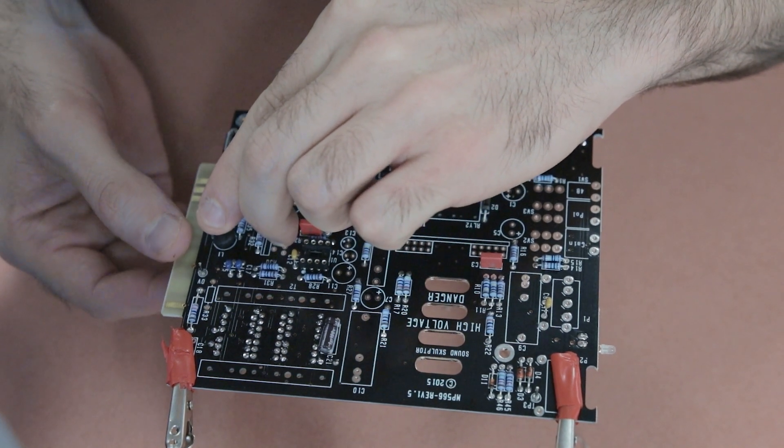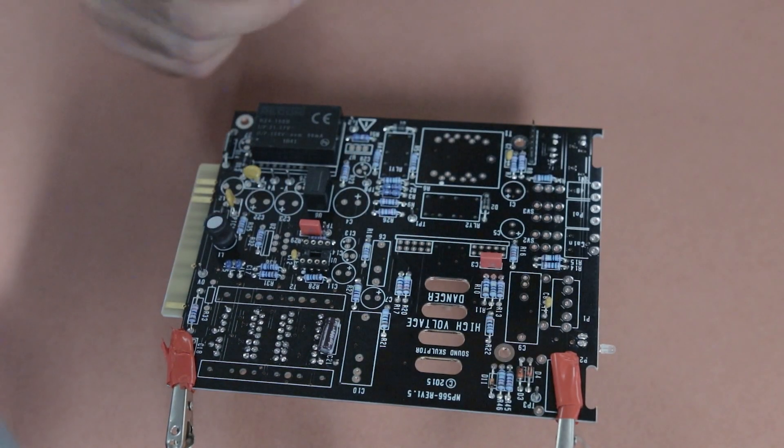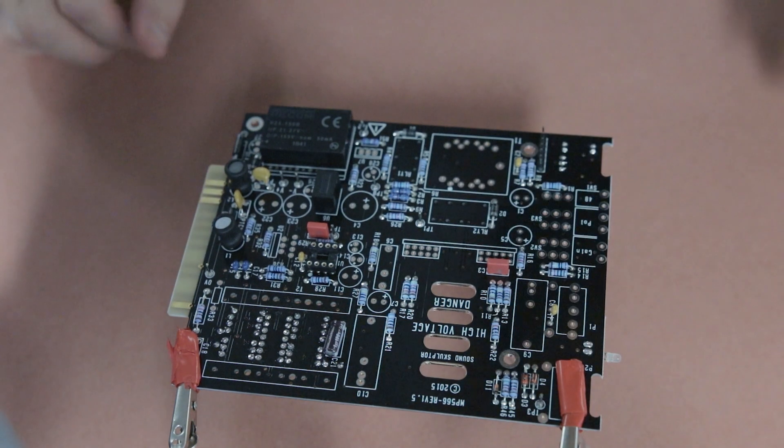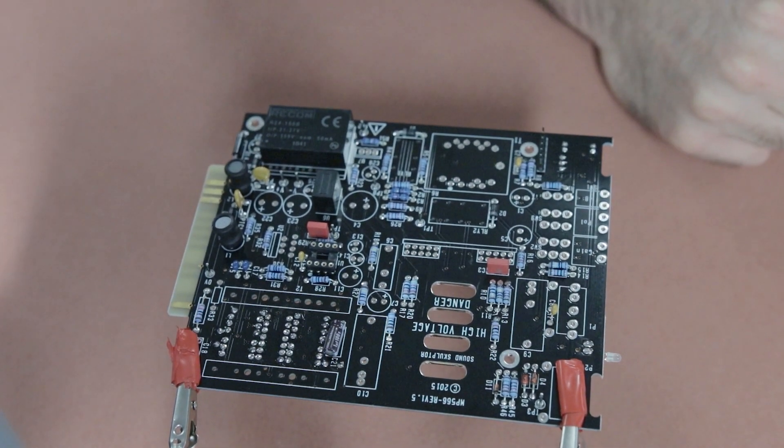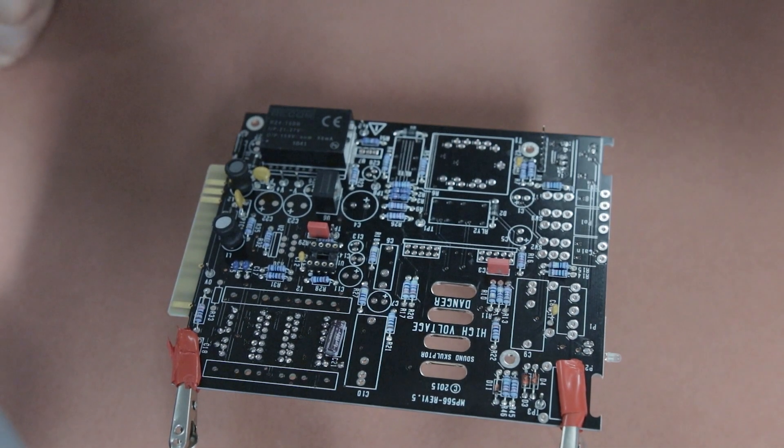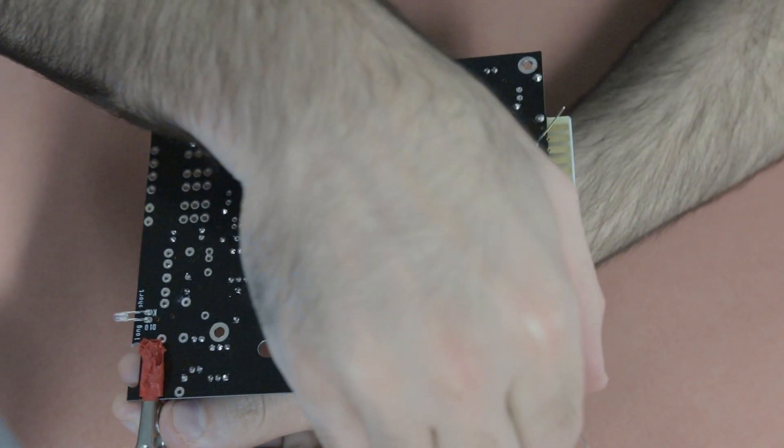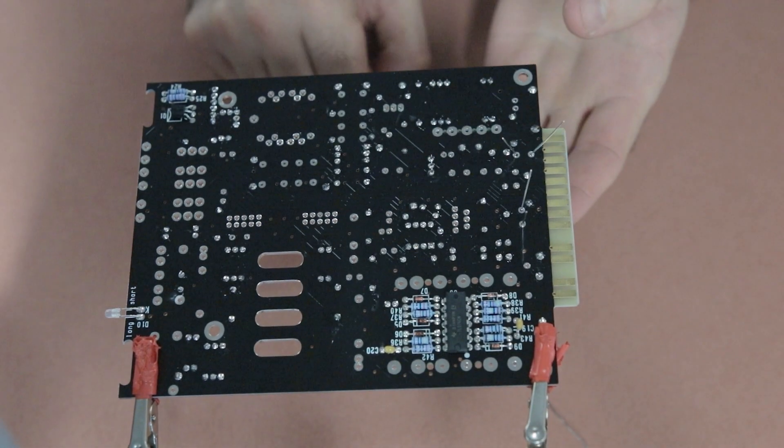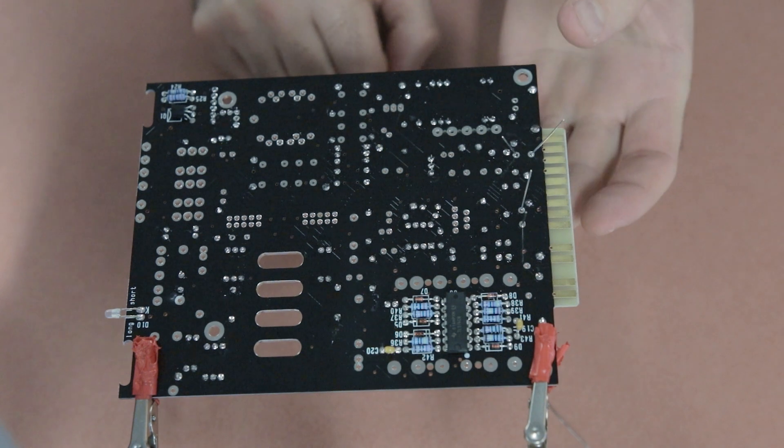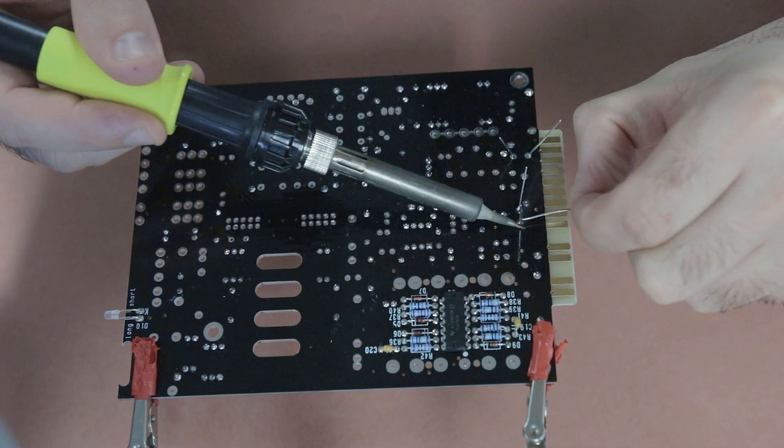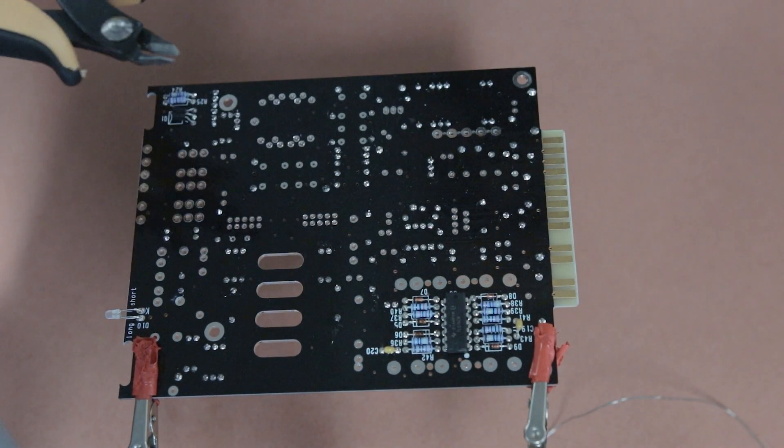Then the next component were these pair of radial inductors and they kind of look a little bit like a capacitor except they're not polarised so you don't have to worry about their orientation and they go in pretty easily and you can just bend the legs to hold them in place and flip the board and then solder them in place and then snip the legs.